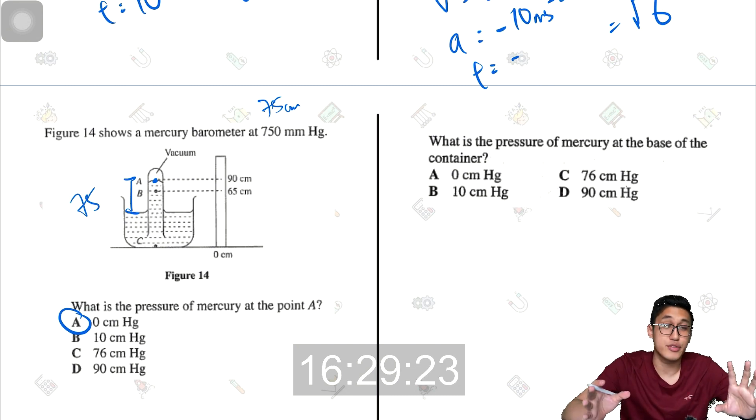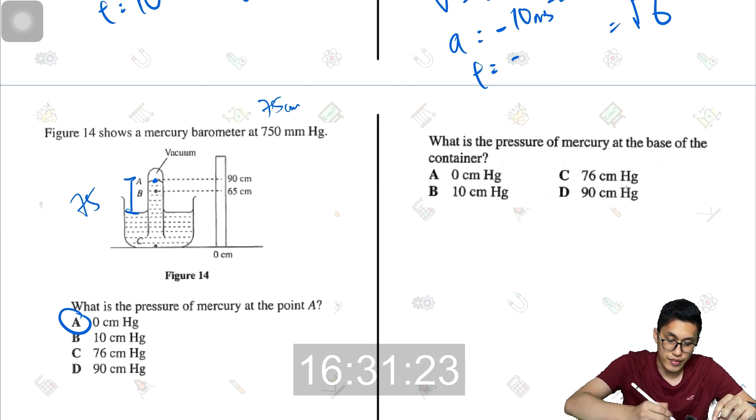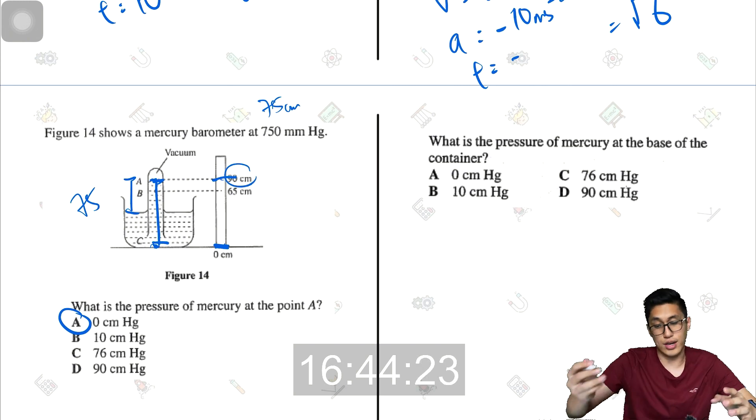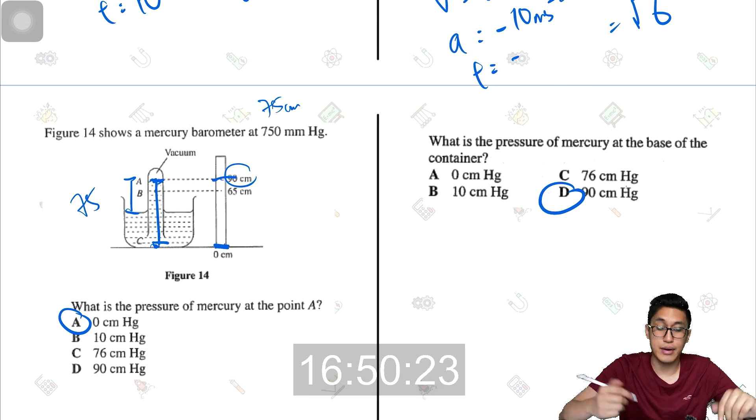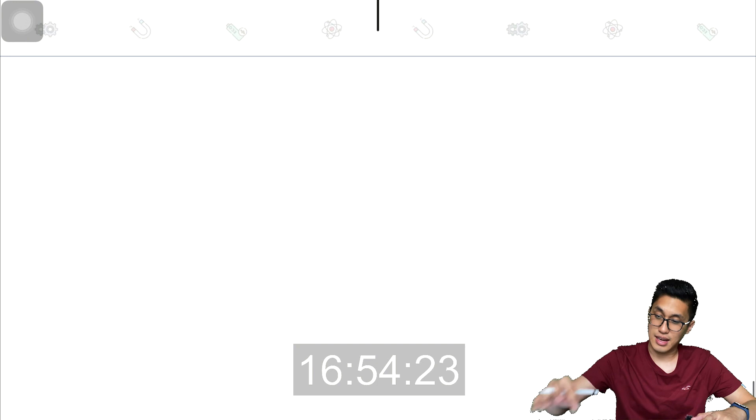What about the pressure of mercury at the base of the container? So the base of the container here, now we know that the 75 cm is actually measured from here. This is 75 because that is atmospheric pressure. Now, to find out what is the pressure here, I just need to know what is the length of the column of mercury. And from this ruler, I can see that zero is at the base, and here is 90, so I know that it must be 90 cm of mercury pressing down on point C.